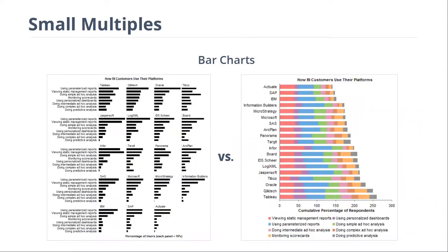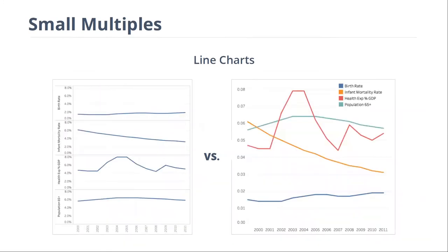Stacked bar charts with many different colors are difficult to read — putting them into a grid format of separate bar charts makes it a lot easier. And for line charts, when we have overlapping lines it can look like a spaghetti chart and be hard to read. If we break the lines out from one another into separate small charts, they're easier to understand.